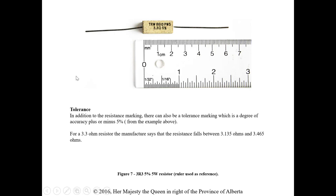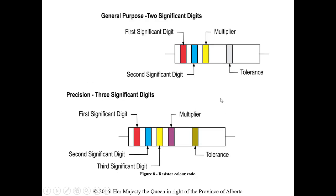Resistance also has a tolerance — it's been labeled with a degree of accuracy, plus or minus 5% in this example. So 3.3 ohms at 5% means it falls between 3.135 and 3.465 ohms. It's not exact. In our lab, you can either read the resistor or measure it with your meter to get an actual accurate reading. That tolerance represents a range of values.